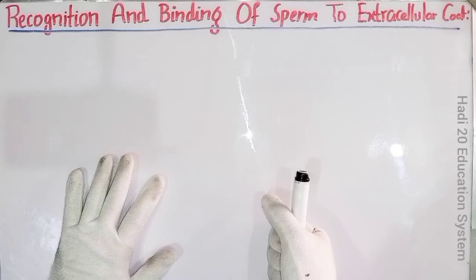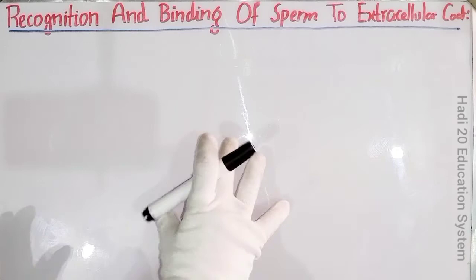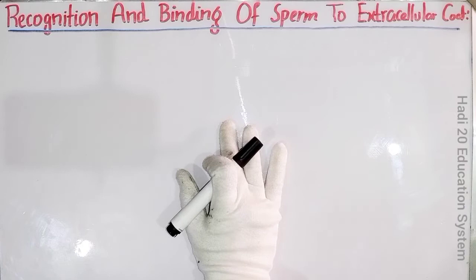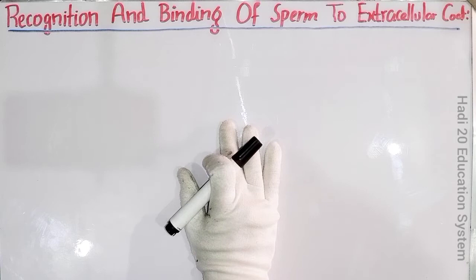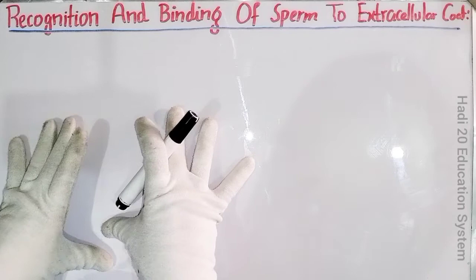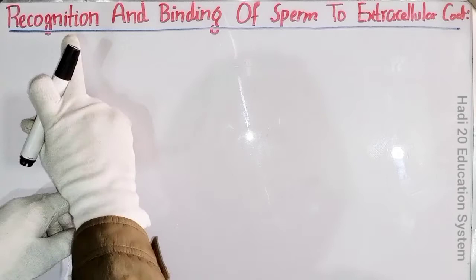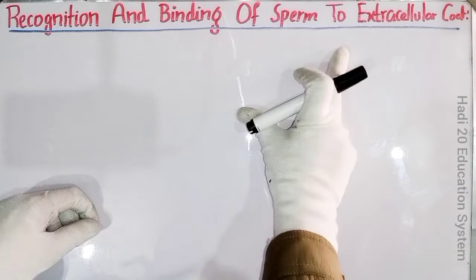Bismillahirrahmanirrahim, Assalamualaikum dear friends. This is lecture number five from chapter number four, on fertilization. The third point from the topic is external fertilization of sea urchins, from developmental biology for BS Zoology and MSc Zoology students. Today we are looking at external fertilization of sea urchins — the topic is recognition and binding of sperm to the extracellular coat.